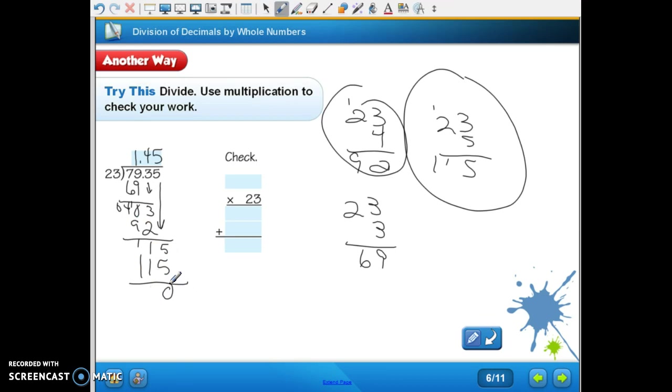Now, if you remember from earlier in the year, we could multiply to check, right? So we're going to take our divisor, and we're going to multiply it by our quotient. So three times five is fifteen. Regroup of one. Three times four is twelve, plus one is thirteen. Regroup of one. Three times one is three, plus one is four.